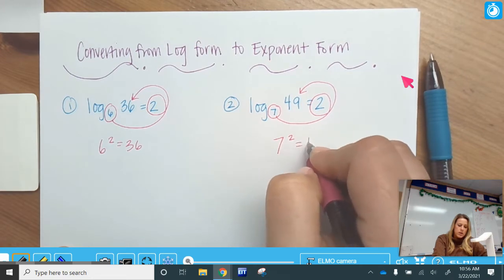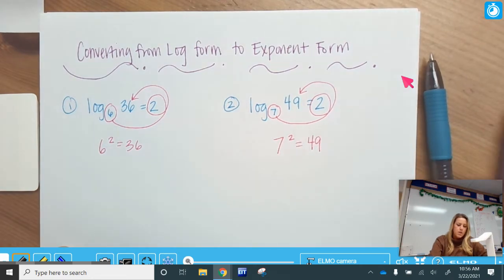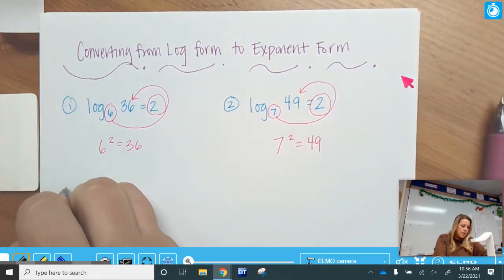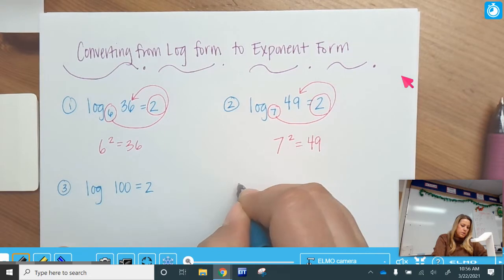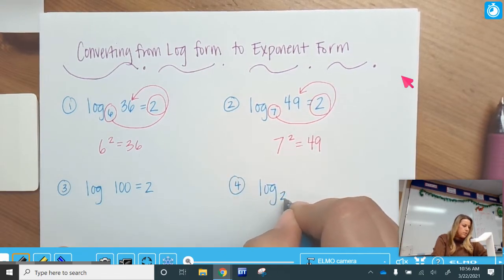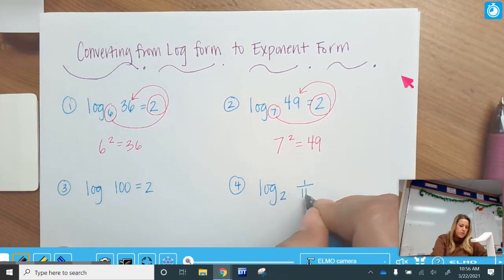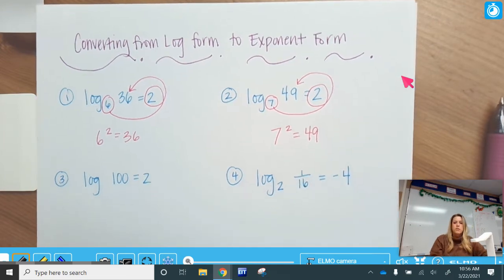Base, exponent, answer. Okay, so let's do a couple more. So log of 100 equals 2, and log base 2 of 1 over 16 equals negative 4. So let's look at these ones.